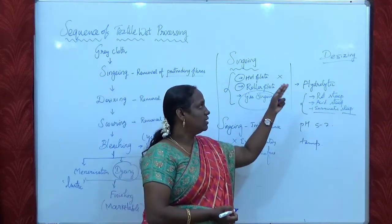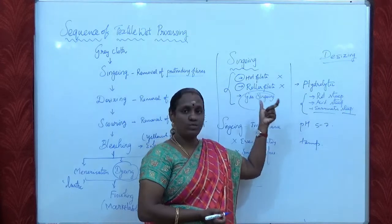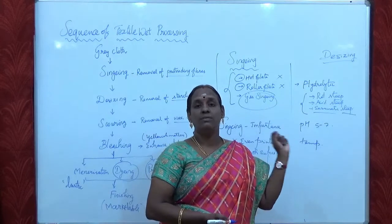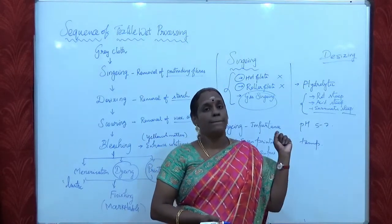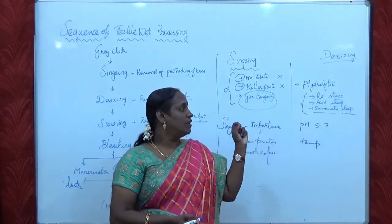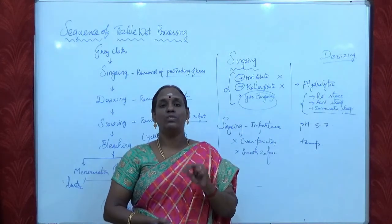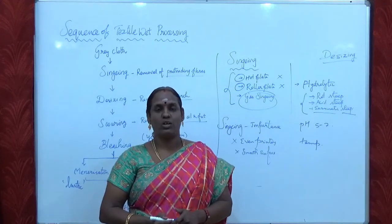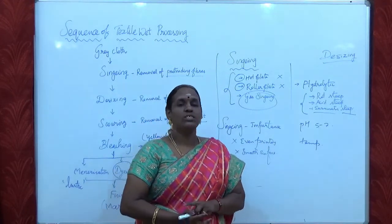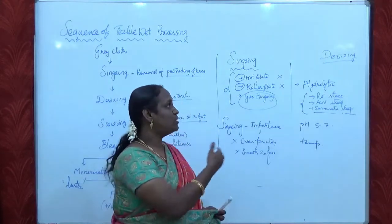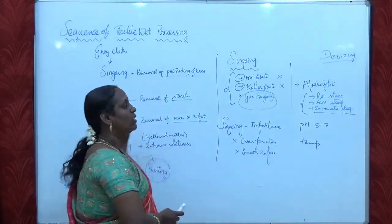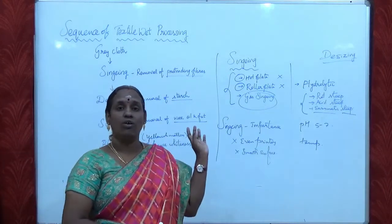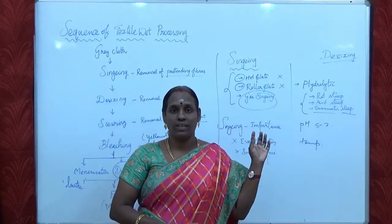In the hydrolytic types of desizing, there are three methods: raw steep, acid steep, and enzymatic steep. The enzymatic steep is the most effective method because the enzymes only react with the starch and remove it from the fabric. In the next class we will see other types of desizing and the remaining processes carried out to convert the gray cloth into the marketable product. Thank you so much.